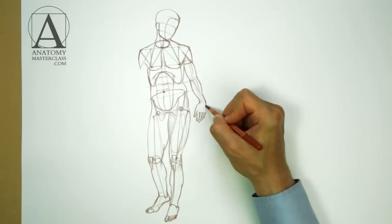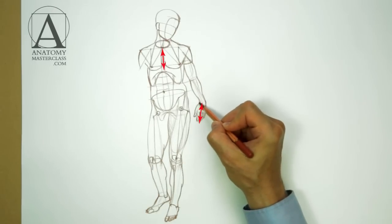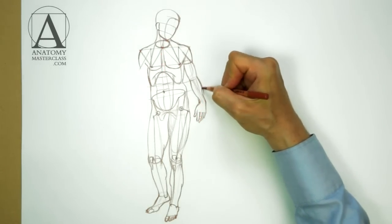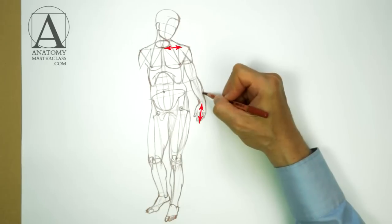This is an important measuring unit for the human body. The length of the hand is also equal to the length of the breastbone. It is also equal to the length of the collarbone.